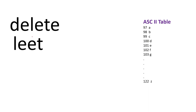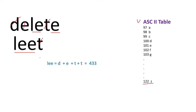Here I have taken two strings: 'delete' and 'leet'. We have to find the minimum ASCII sum of deleted characters to make them equal. Here is the ASCII table for reference: 'a' has value 97, 'b' has 98, and gradually up to 'z' with value 122. One option is to make both strings equal to 'li' — to do that, we delete 'D', 'E', 'T' from 'delete' and 'T' from 'leet', giving a total ASCII sum of 433.